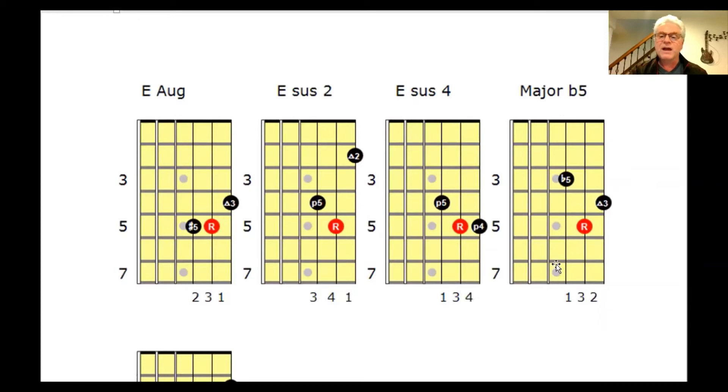A major flat five. This time we'd start with the flat five which is B flat, a root which is E, and our third which is G sharp, using our first, third, and second fingers.